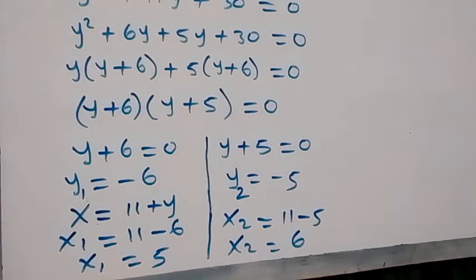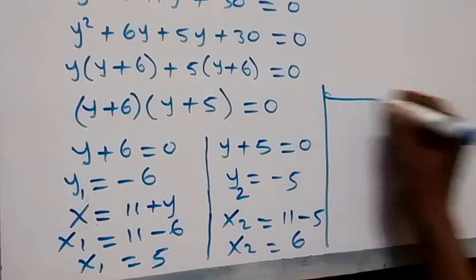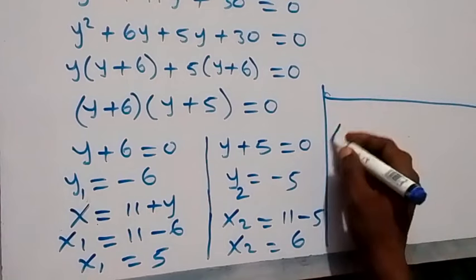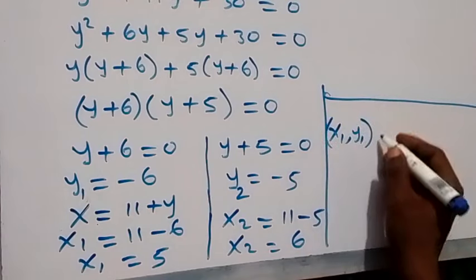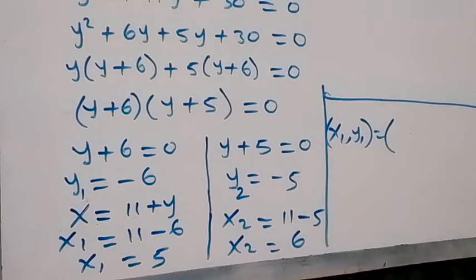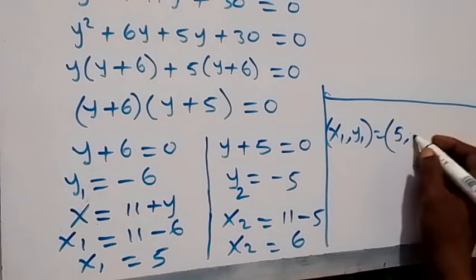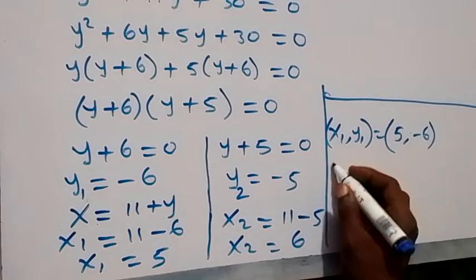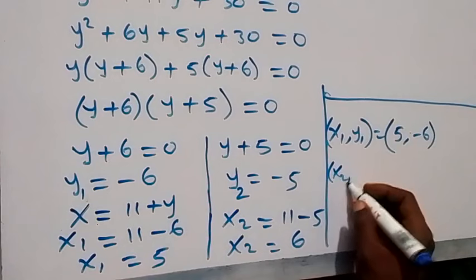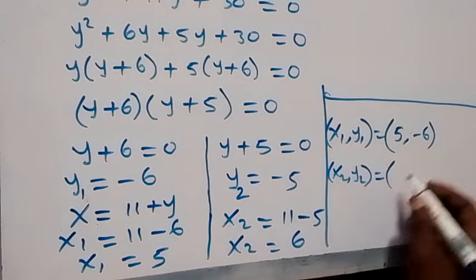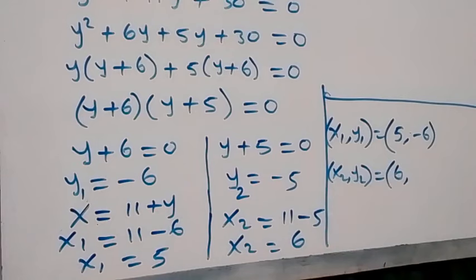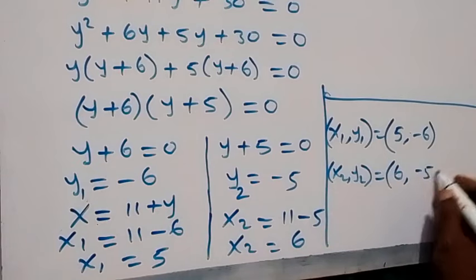The solutions to this problem are: the first solution is (x1, y1) which gives us (5, minus 6), and the second solution is (x2, y2) which gives us (6, minus 5).